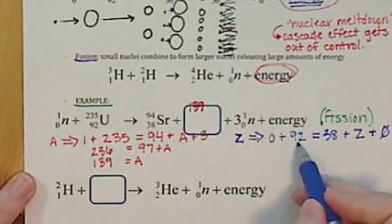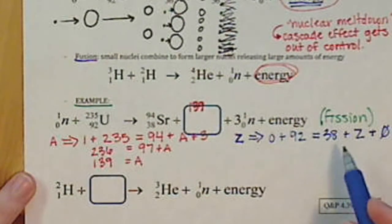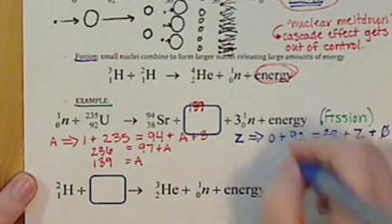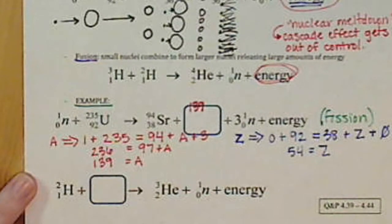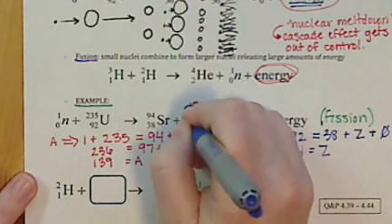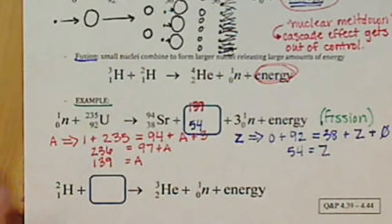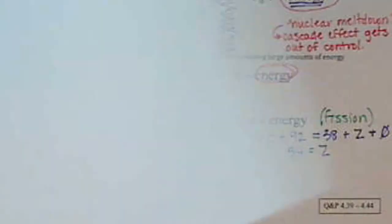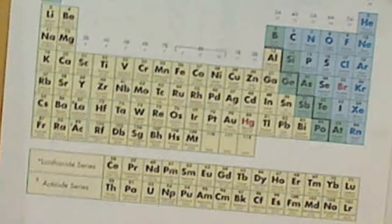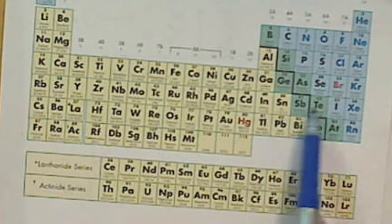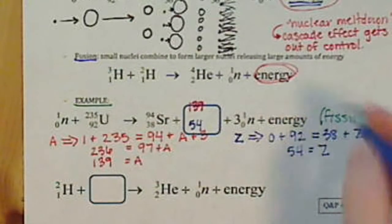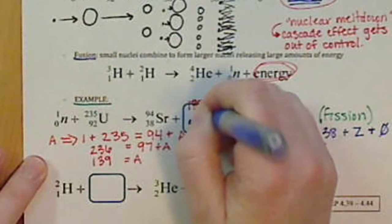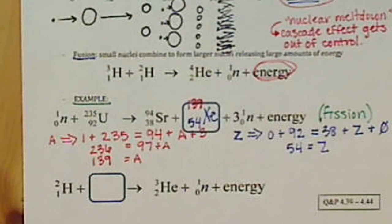So we have 92 minus 38 and we get 54 is equal to our atomic number. So that goes down below. And then we look to our periodic table for the atomic number of 54, that's xenon. So we have xenon-139 is our missing symbol there.